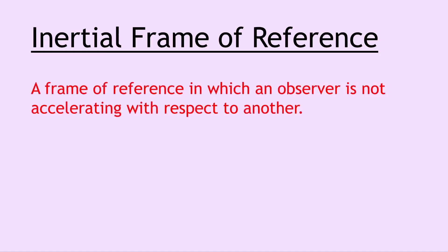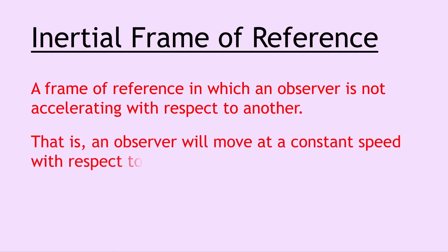Moving on to talk about relativity we have inertial frame of reference and this is a frame of reference in which an observer is not accelerating with respect to another. That is an observer will move at a constant speed with respect to another and this is what is used in special relativity which was seen in the higher physics course.